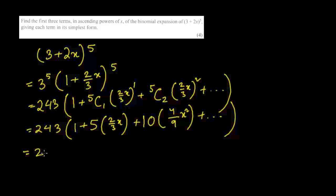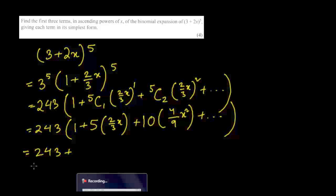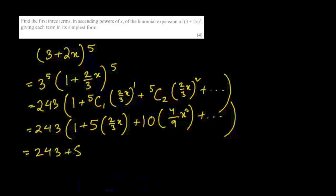Multiplying through by 243: 243·1 = 243, plus 243·5·(2/3)x. Using the calculator, this gives 810x, plus 243·10·(4/9)x², which gives 1080x² plus dot dot dot. So the final expansion is 243 + 810x + 1080x² + …